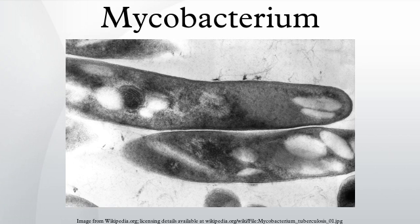The distinguishing characteristic of all Mycobacterium species is that the cell wall is thicker than in many other bacteria, which is hydrophobic, waxy, and rich in mycolic acids (mycolates). The cell wall consists of the hydrophobic mycolate layer and a peptidoglycan layer held together by a polysaccharide. The cell wall makes a substantial contribution to the hardiness of this genus, and its biosynthetic pathways are potential targets for new drugs for tuberculosis.